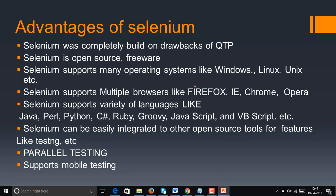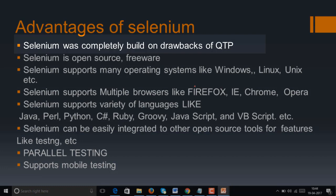When talking about the advantages of Selenium, QTP comes first because it is the only major market competitor for Selenium. The core agenda of Selenium is that it was completely built around the drawbacks of QTP — as simple as that.